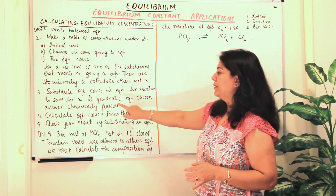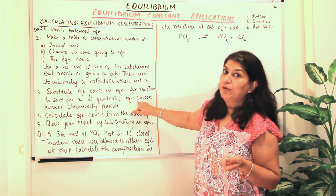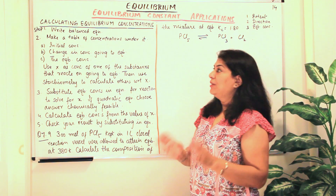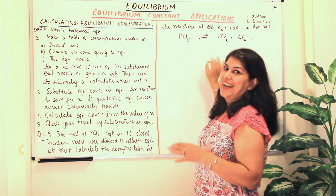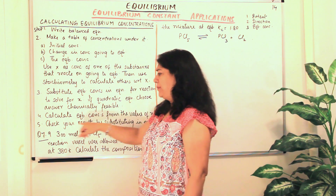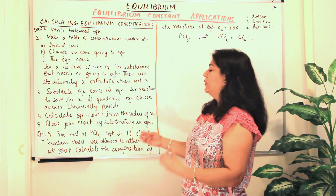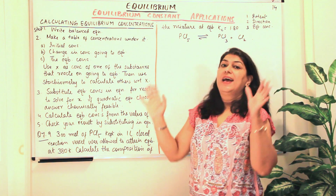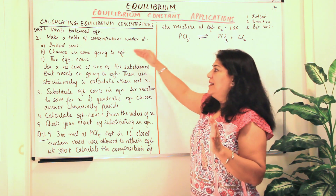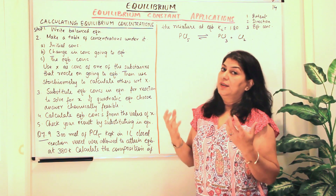You might get a quadratic equation, and if you do, we use the quadratic formula to get the value of X. Once we arrive at the value of X, we substitute it back and get all the equilibrium concentrations — that is the fourth step. The fifth step is to verify your answer by putting all the concentrations you have calculated back into the expression and checking that it makes sense, that it is in the correct ratio. These are the five steps you follow to arrive at the equilibrium concentrations if you know the equilibrium constant.